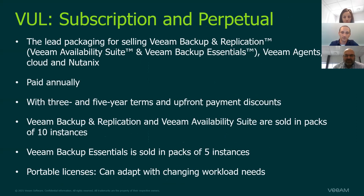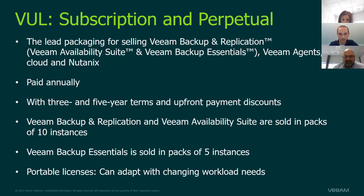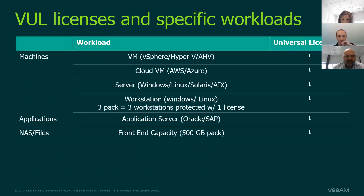Veeam Availability Suite and Veeam Backup Essentials are in fact just the same as Veeam Backup & Replication, but they are bundles. If you buy Veeam Availability Suite or Veeam Backup Essentials, you're buying Veeam Backup & Replication together with Veeam ONE. It's a subscription model — you pay from one year up to five years maximum at once — and it's always Enterprise Plus level features with production support. Backup & Replication and Veeam Availability Suite are sold in bundles of 10 instances. Veeam Backup Essentials is sold in packs of five minimum, with a maximum of 50.